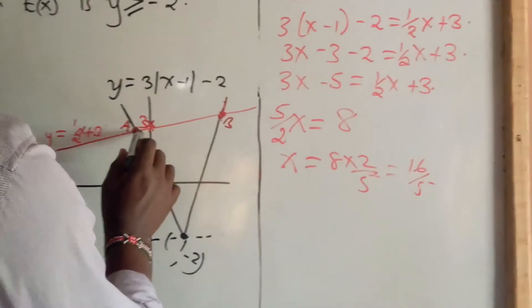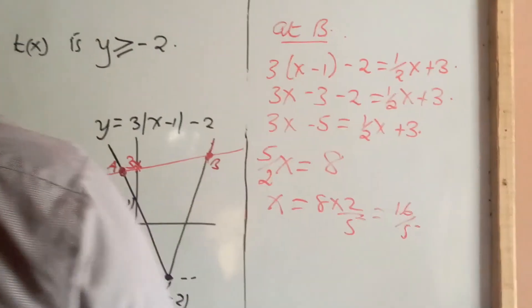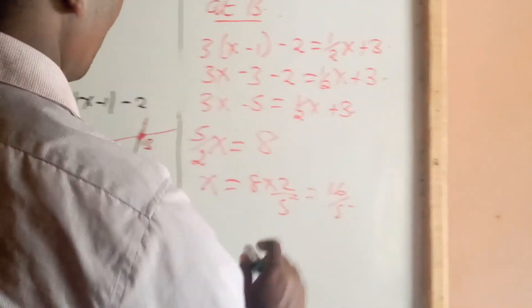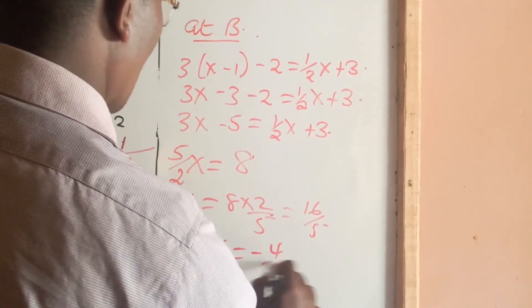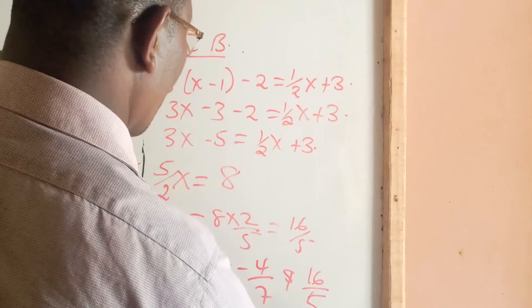At this particular point of intercept, x = -4/7. So, x is -4/7 and 16/5.